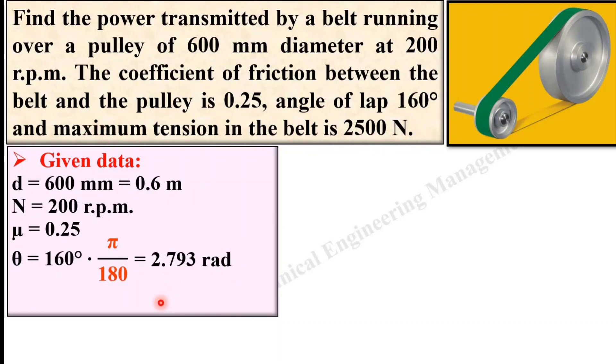Next, maximum tension in the belt is 2500 Newton. Here again keep in mind this is the maximum tension, so it should be actually T_max. But you know that T_max is equal to T1 plus Tc where Tc is the centrifugal tension. But here there is no description about the centrifugal tension, so you can ignore centrifugal tension, means it is nearly equal to 0, and that is why T_max is equal to T1. That is why I have taken directly maximum tension T1 equals 2500 N.